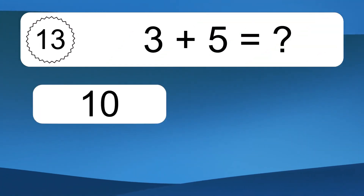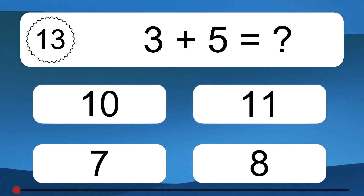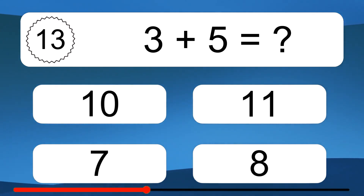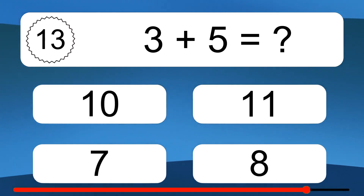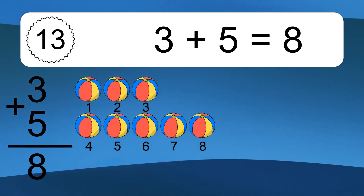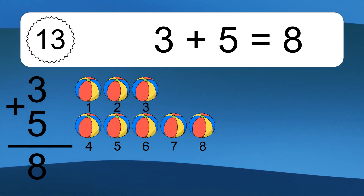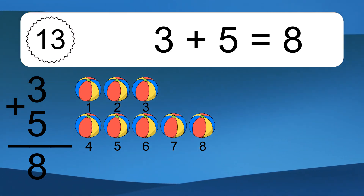3 plus 5 equals what? 3 plus 5 equals 8. Let's count it. 1, 2, 3, 4, 5, 6, 7.